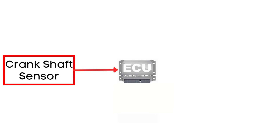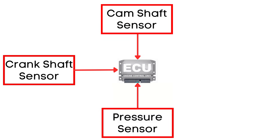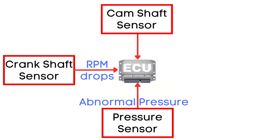The Engine Control Unit, or ECU, monitors the signals from the Crankshaft Position Sensor, Camshaft Position Sensor, and Cylinder Pressure Sensor. These sensors provide real-time data about your engine's performance. When a misfire occurs in one or more cylinders, it causes the engine's RPM to drop abruptly. Simultaneously, the pressure inside the cylinder becomes abnormal. This sudden change in signals from the sensors is what the ECU reads as a misfire.